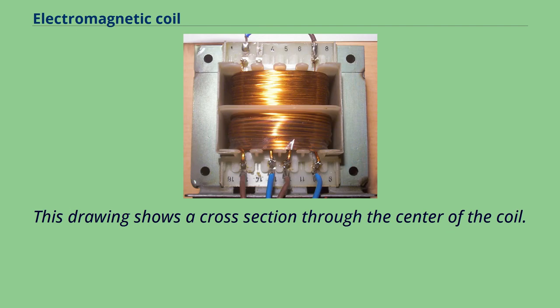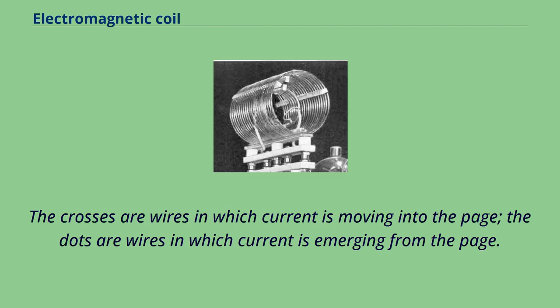This drawing shows a cross section through the center of the coil. The crosses are wires in which current is moving into the page; the dots are wires in which current is emerging from the page.